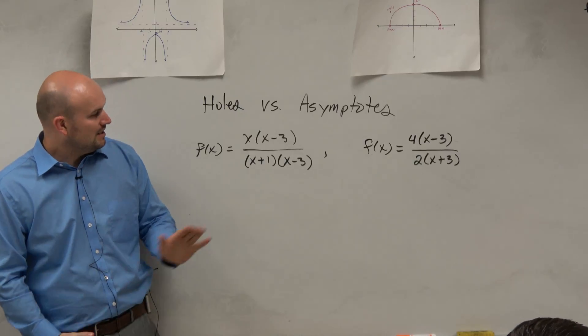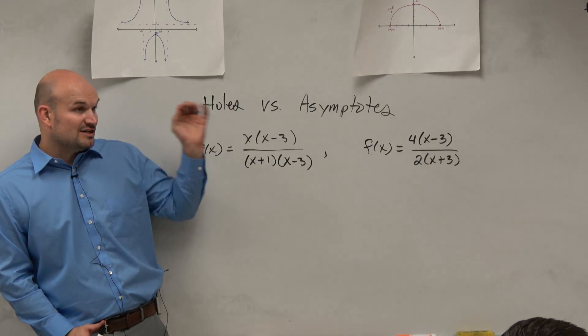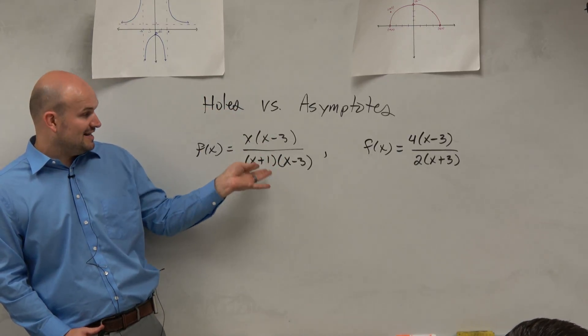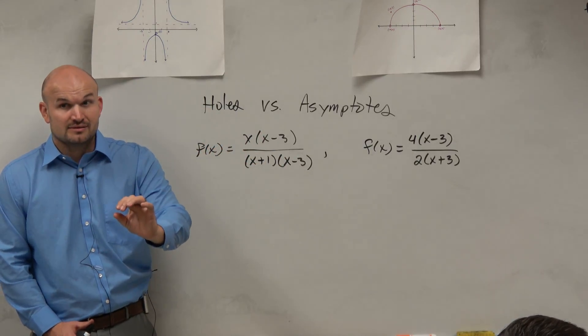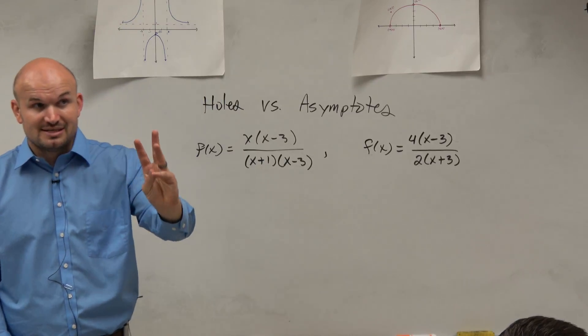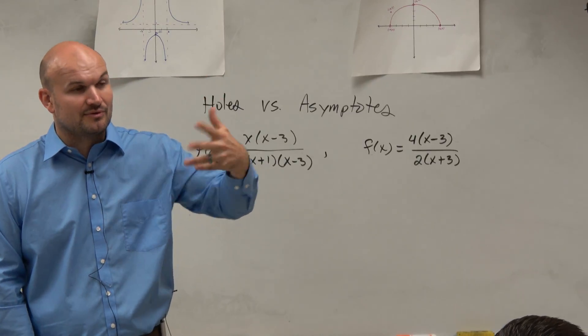But anyways, that's not the point here. Well, my point is that since the domain is undefined at negative 1 and 3, because that's what makes the denominator equal to 0, those are a discontinuity. Yes? And we talked about two types of discontinuities and three kind of labels for them.